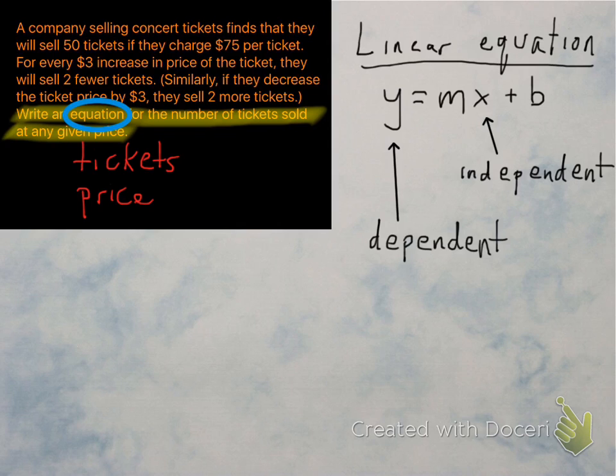The easiest way to do this is to ask yourself which one depends on the other. The one that depends on the other is going to be the dependent variable. That's going to be your Y. So let's see. Does the price depend on the number of tickets you sell, or do the number of tickets you sell depend on the price that you set the tickets?